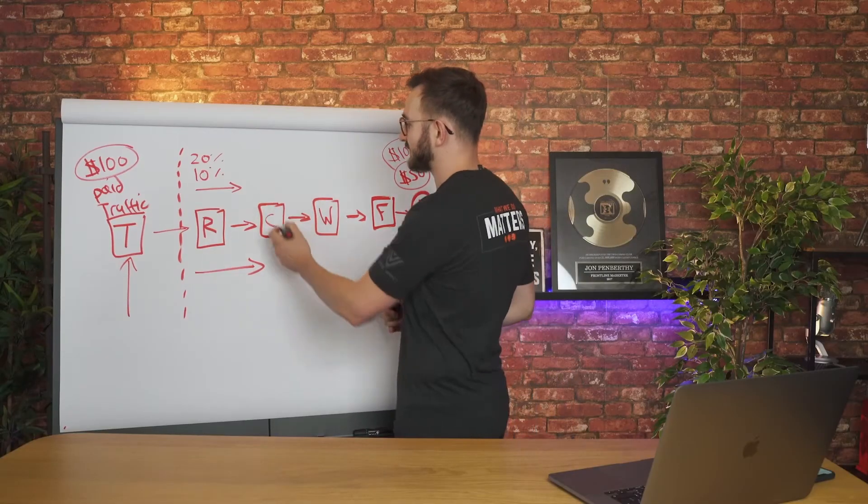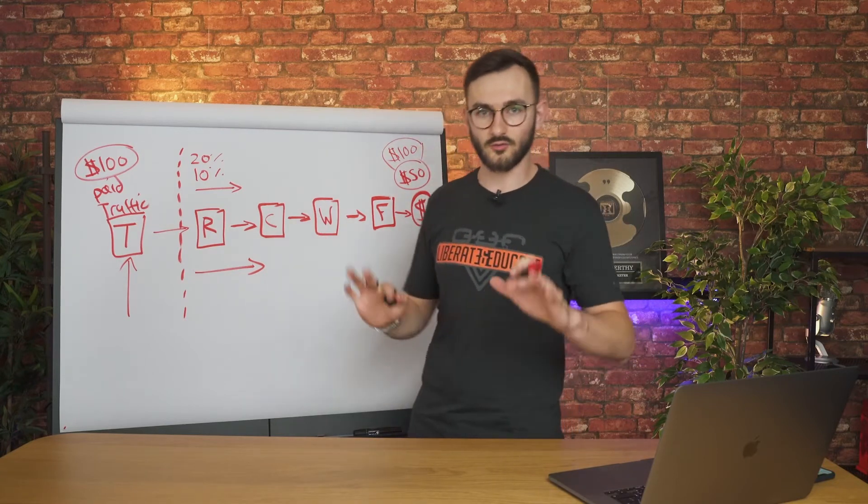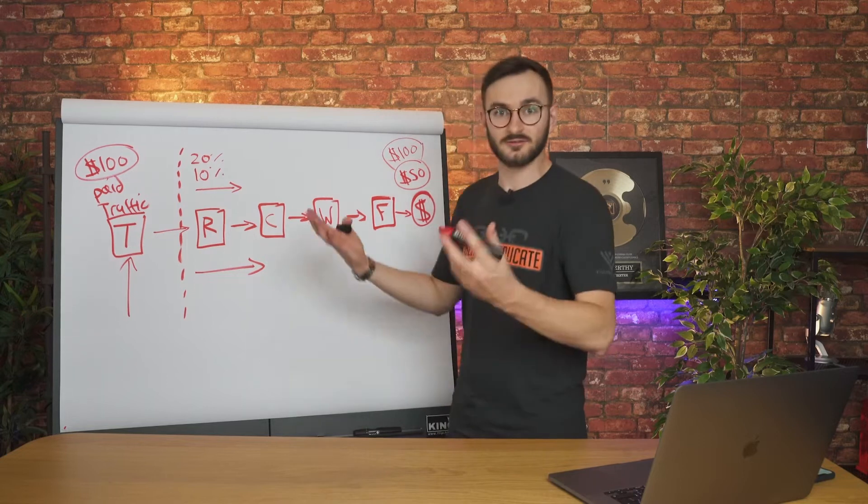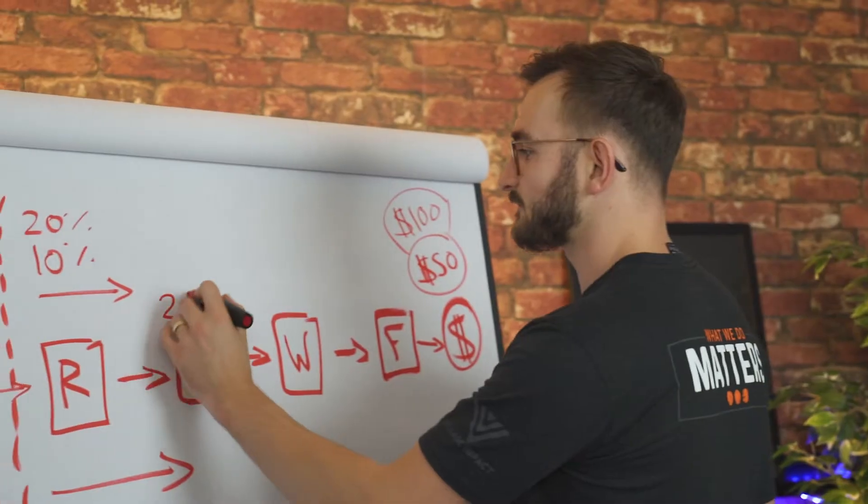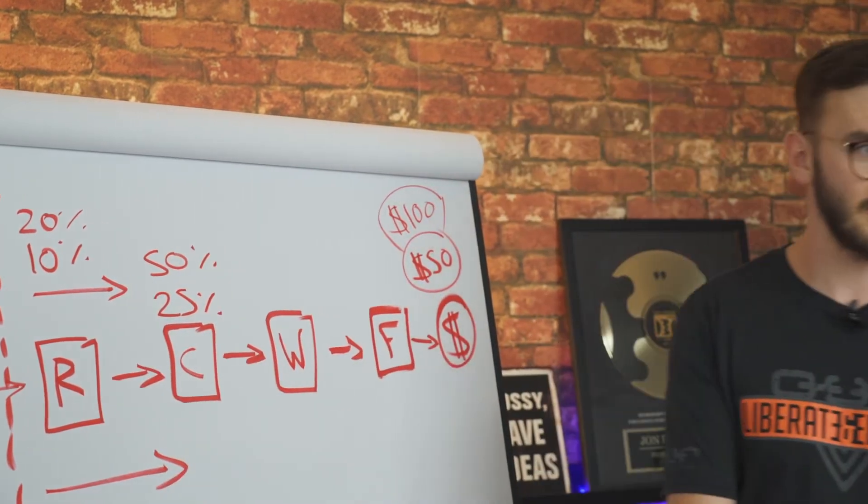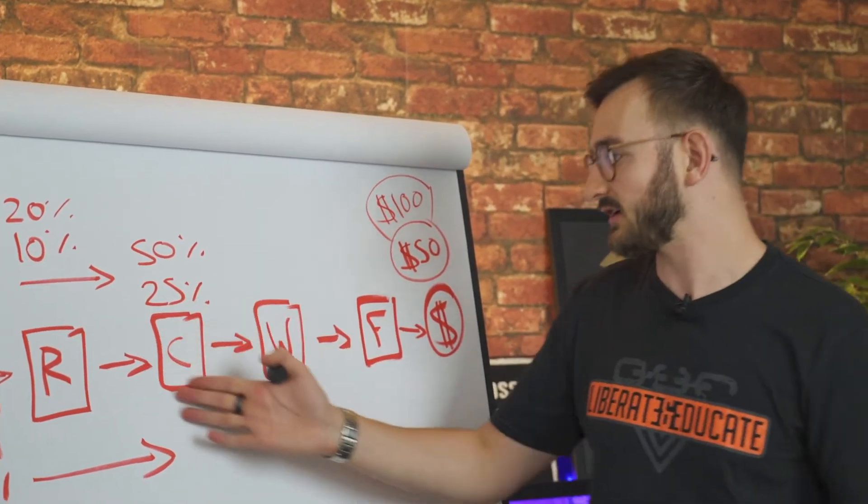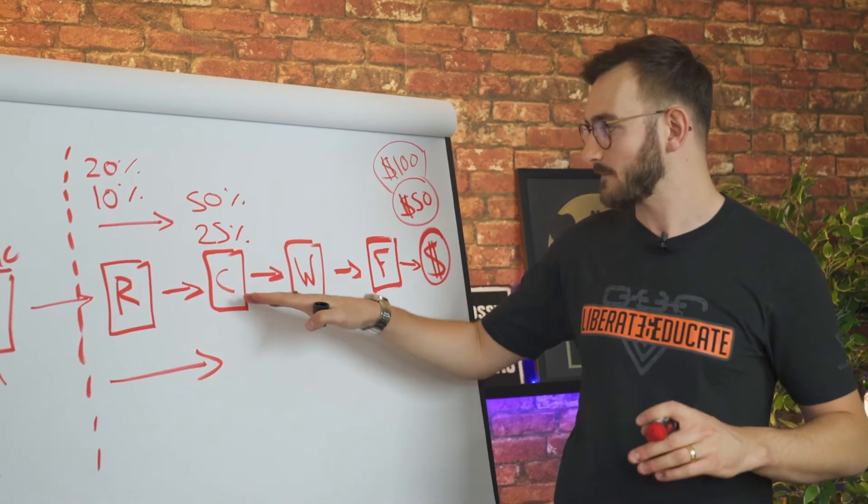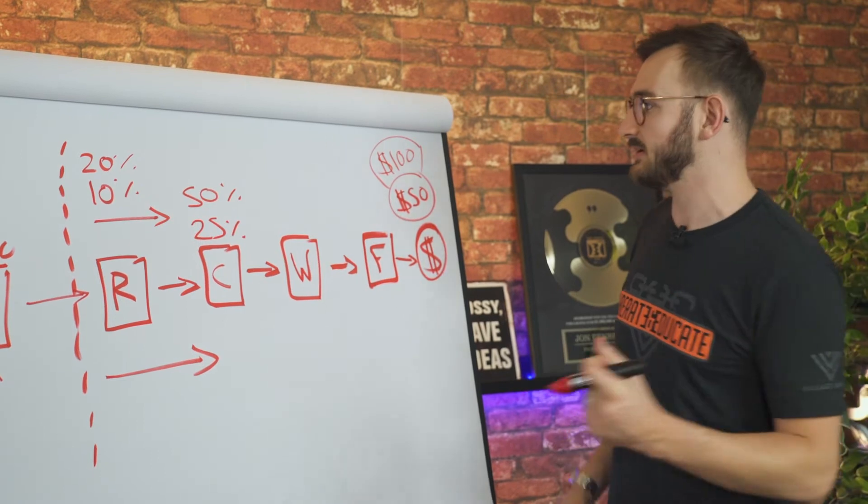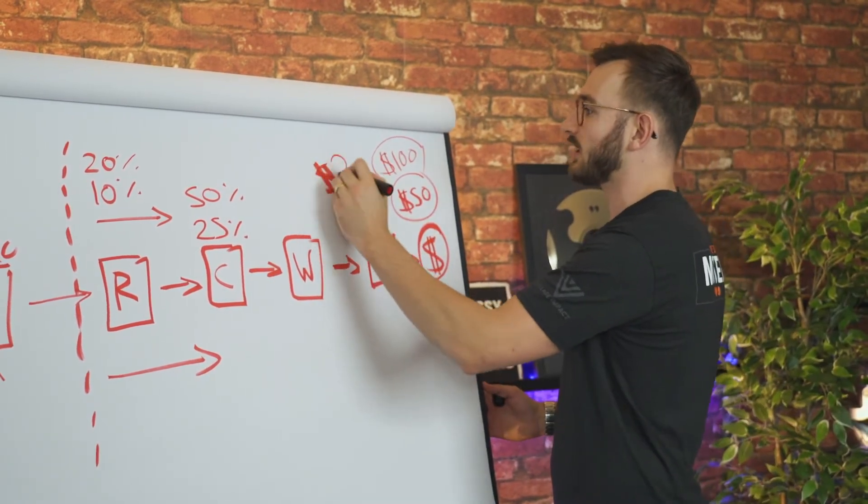Now, if we can tweak the capture page, we're obviously using a webinar funnel right now as an example. So if we can tweak the capture page and get the attendance rate up, imagine if we could get the attendance rate from 25% to 50%. Now again, we've done this. We work with our clients on this. We show them all the ninja stuff that we do on this confirmation page to double attendance rate. It's happened time and time again. So now you've doubled it again. So now you're at 200.